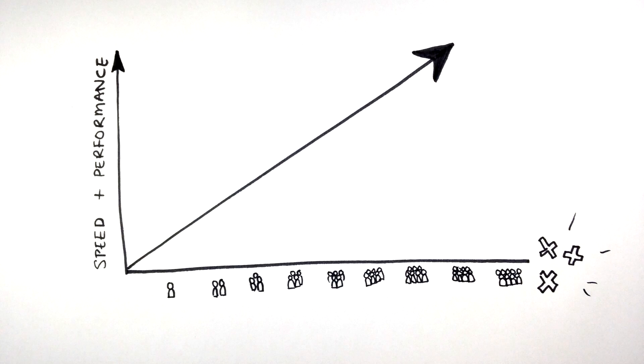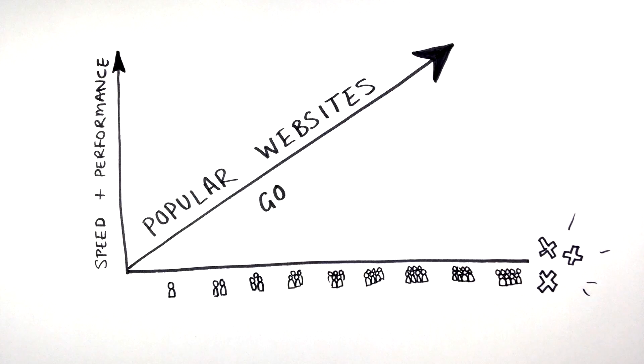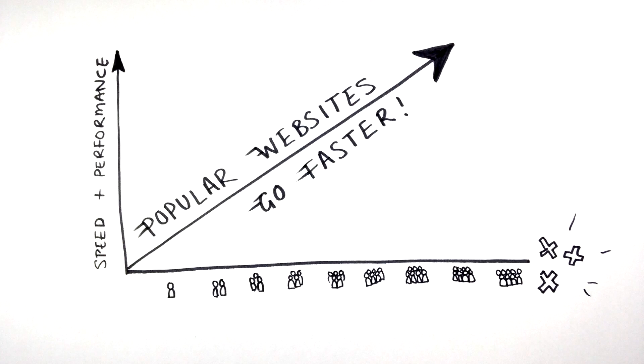In this network, denial of service and similar cyber attacks are thwarted and useless. Popular websites simply go faster rather than crashing. There is a reason this is called logical.